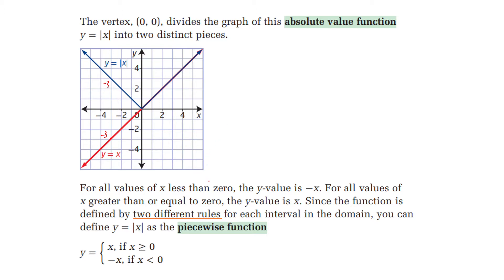We also introduce the new term: piecewise function. This function is actually defined by two different rules for each interval of the domain x. So you can write it as a piecewise function with two rules: if x is greater than 0, y equal to x; if x is smaller than 0, it's going to be y equal to negative x.